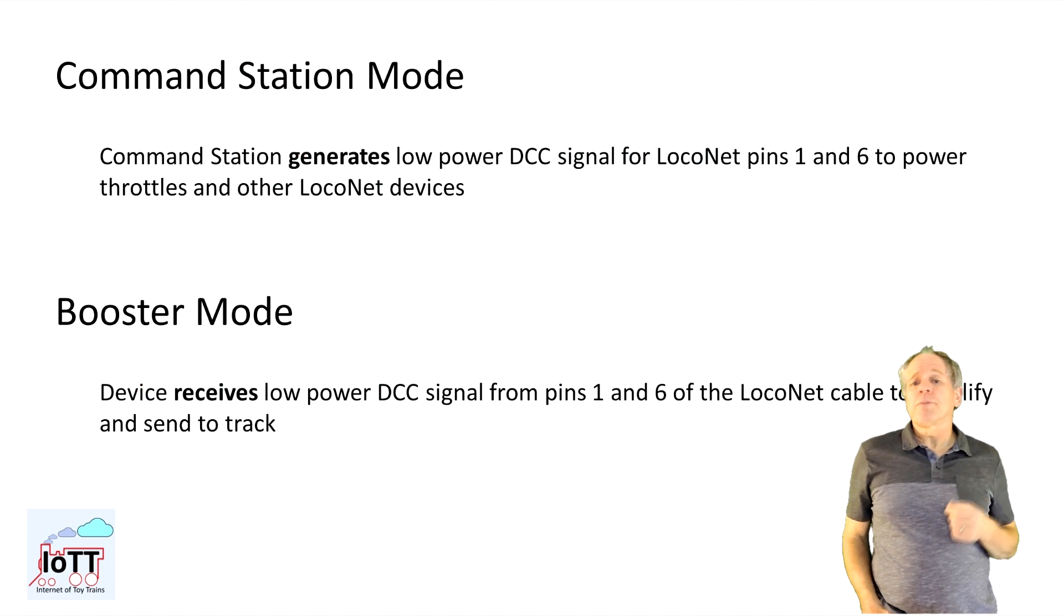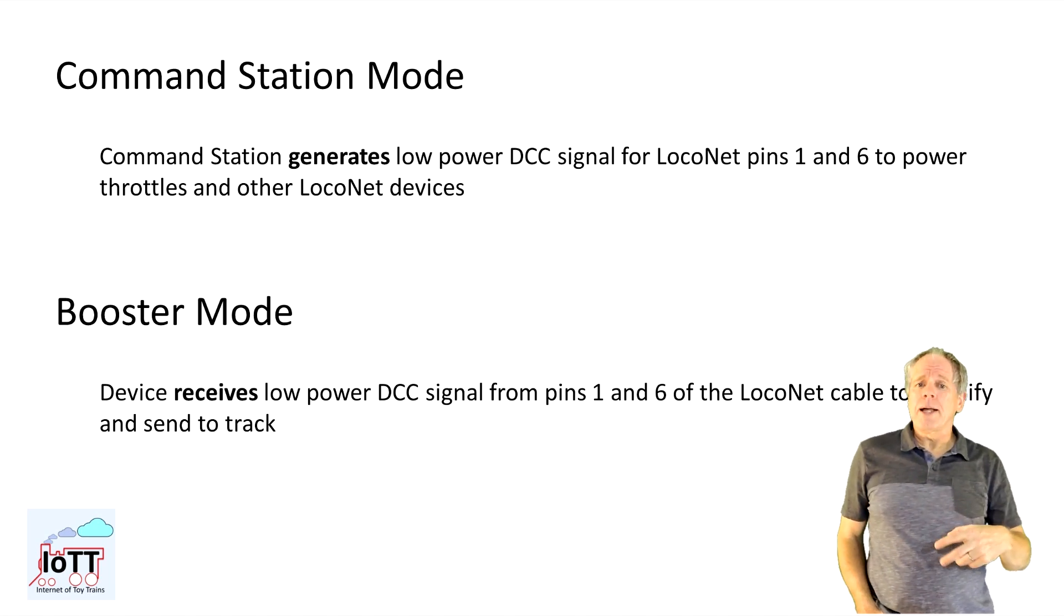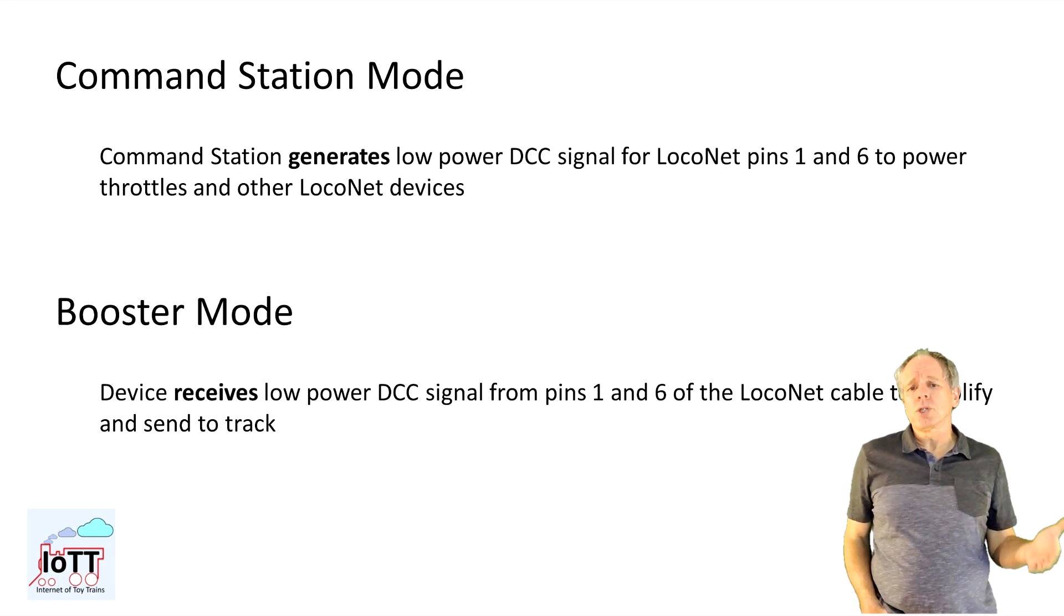The more complex part was dealing with pins 1 and 6 on the LocoNet connector, so the low power DCC signal in the LocoNet cable. In command station mode, these two wires need to be supplied with a low energy DCC signal to provide power to throttles and other LocoNet devices. In booster mode, the low power DCC signal comes from the external command station and needs to be used to detect the DCC signal and send it to the booster. So the work mode is completely different depending on whether the device works as command station or as booster.